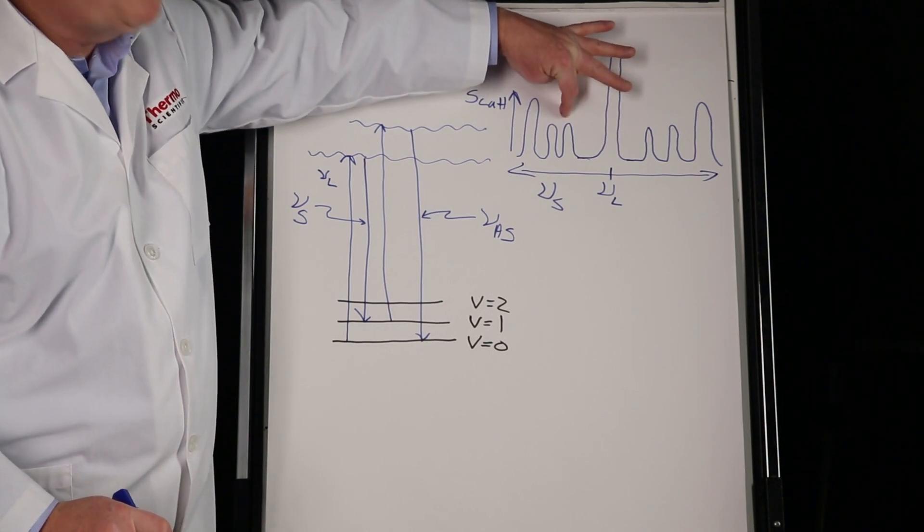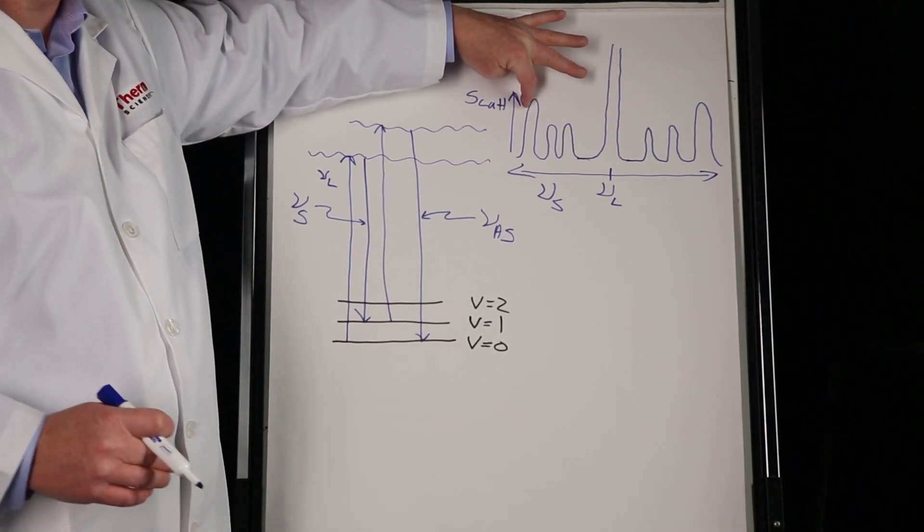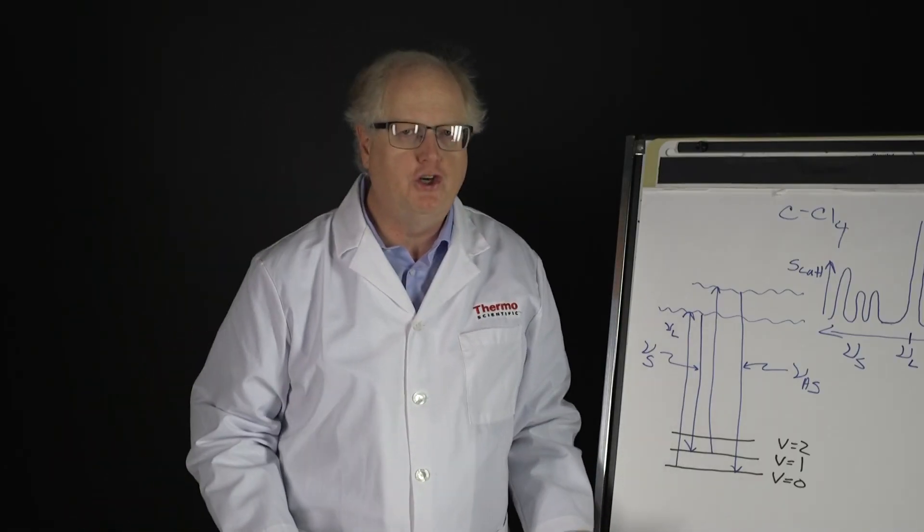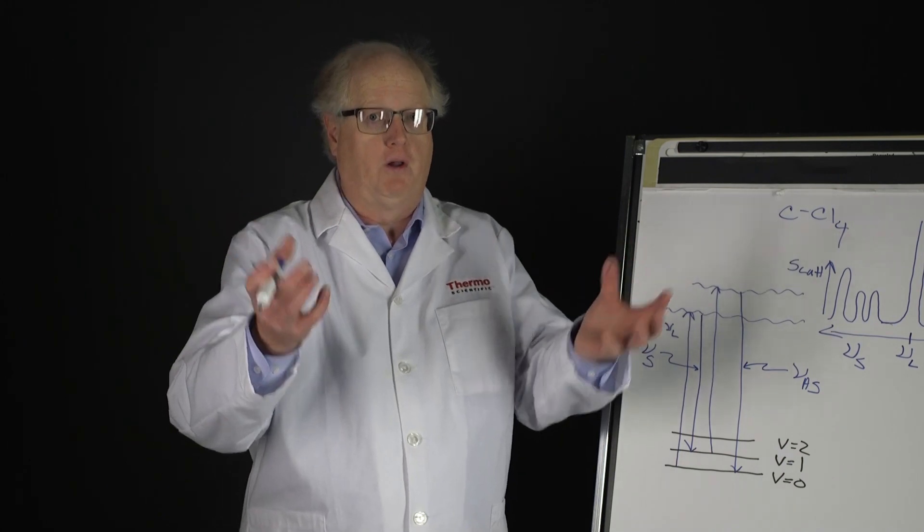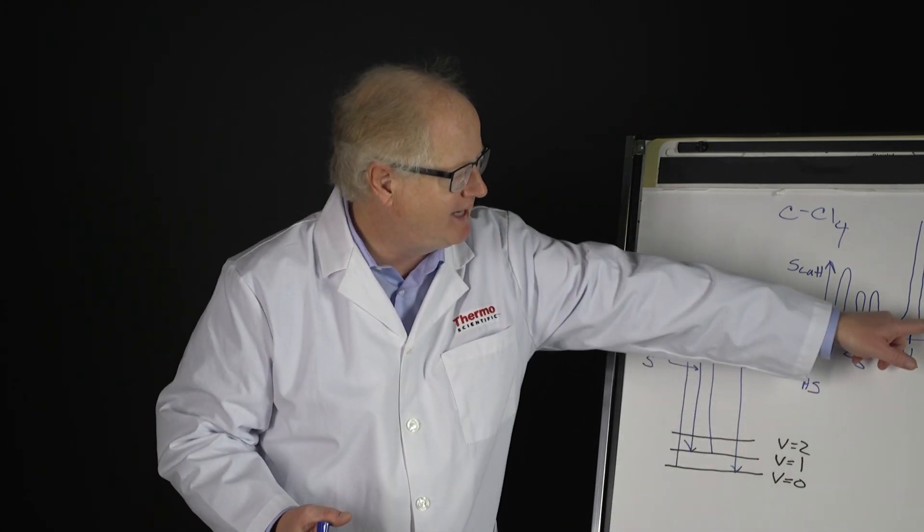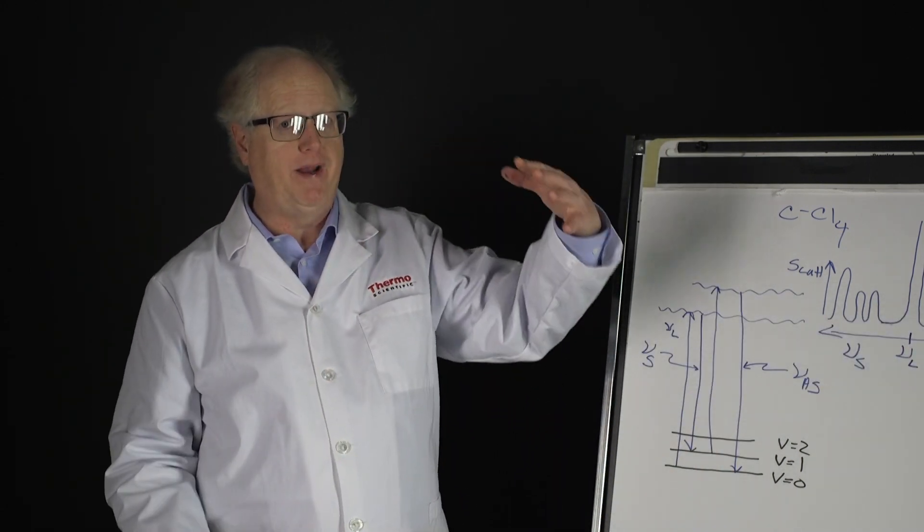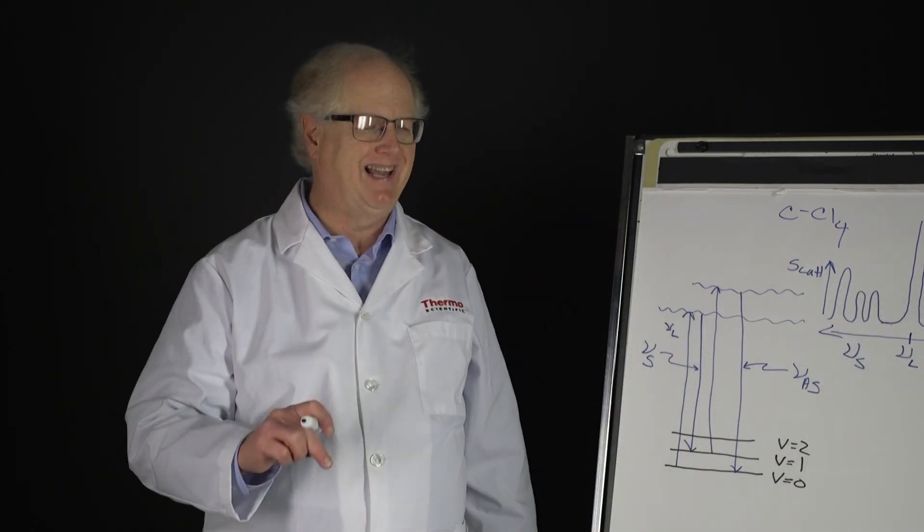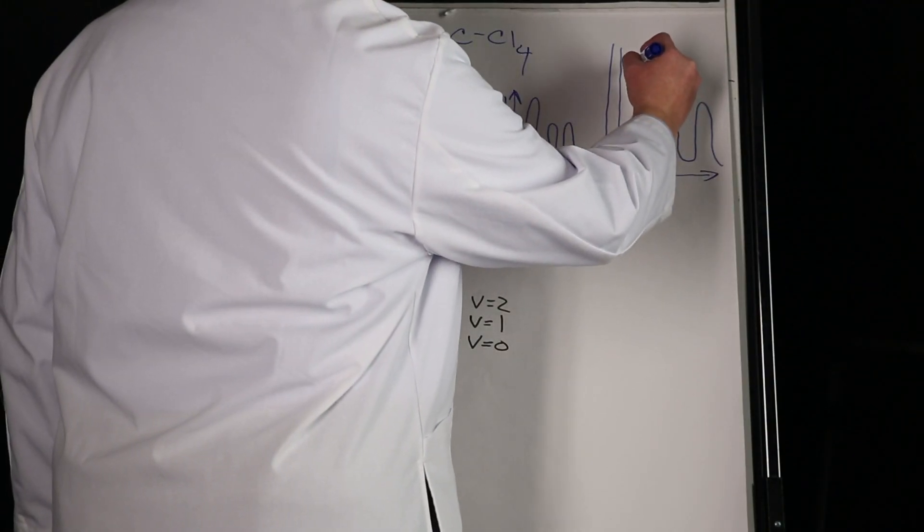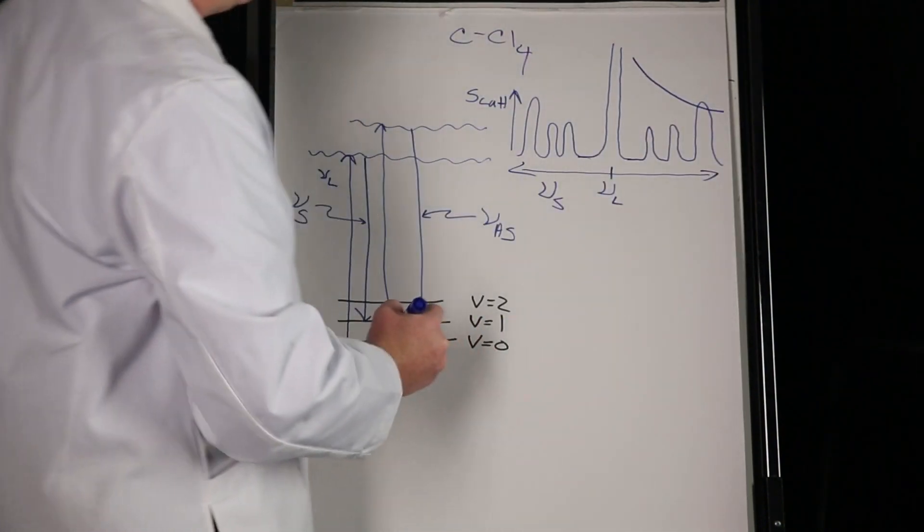As the temperature goes up, you can populate the excited state, but that energy depends upon the spacing of the energy levels. This is a fairly low energy level. This one's a little bit higher. This one's higher still. As the energy goes up, the energy necessary from thermal excitation to boost the molecule up into that excited state for the anti-Stokes side becomes bigger and bigger, and therefore less and less likely.